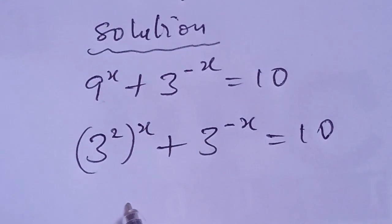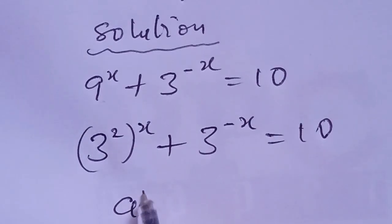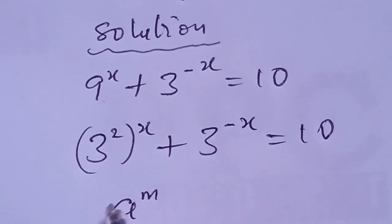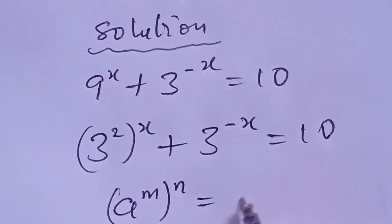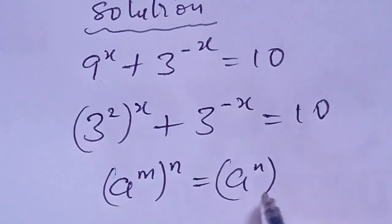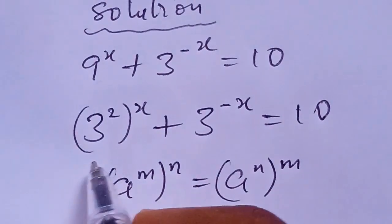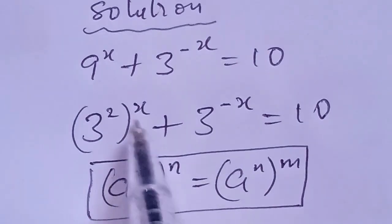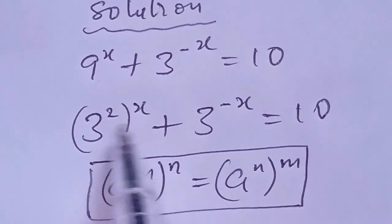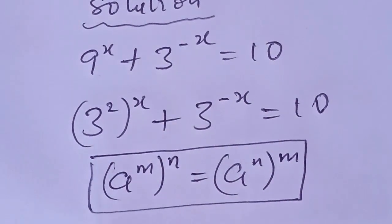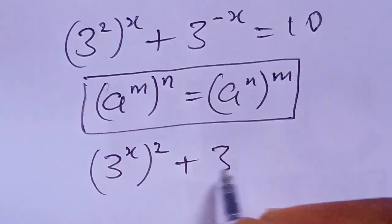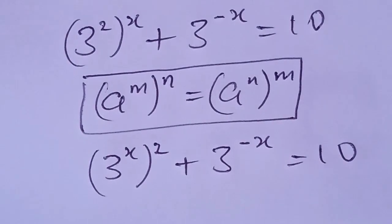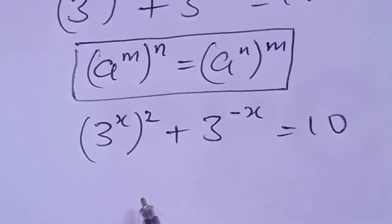Considering the fact that if we have a base a to the power of n, in brackets, to the power of n, this equals base a to the power of n times n. We apply this to this part of the expression, so this becomes 3 to the power of x, in brackets, to the power of 2, plus 3 to the power of minus x, equal to 10. Now we need to make the exponential expression in a simpler form.